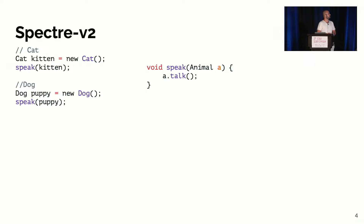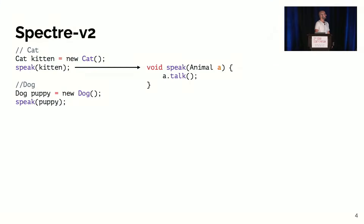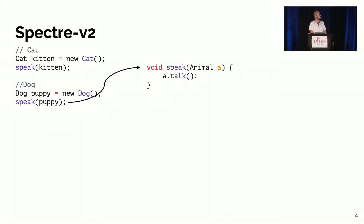I'm going to start with a quick background about Spectre, and in particular Spectre V2, which is one of the many variants. I'll use an example of polymorphism to explain why indirect branch prediction is important. Here we have two classes, both implementing a single method 'speak'. When you call speak from the cat class you expect the function 'meow' to be called, whereas from the dog class you expect 'woof'.